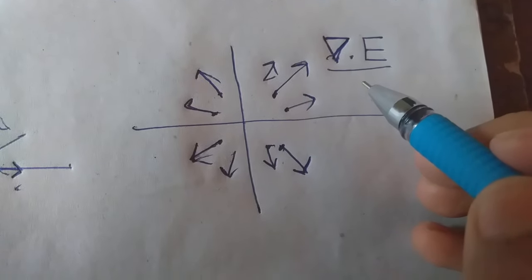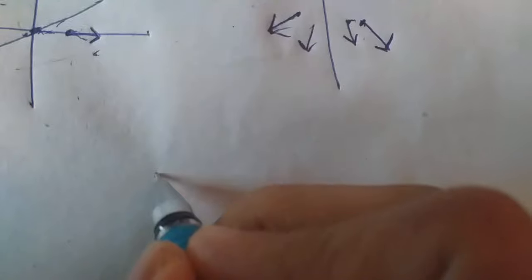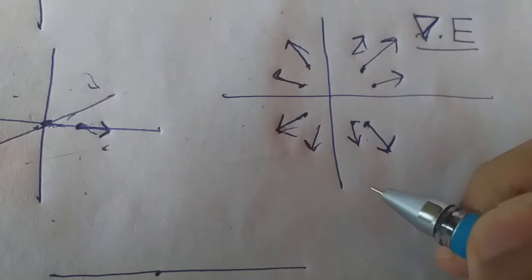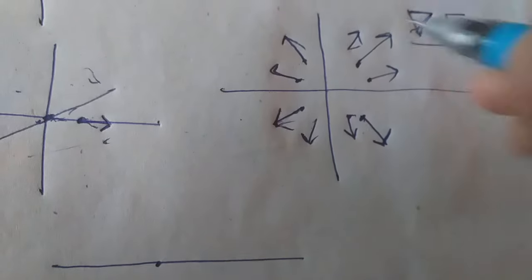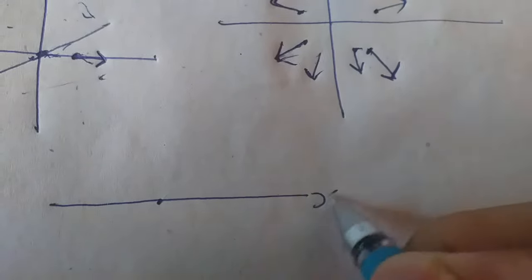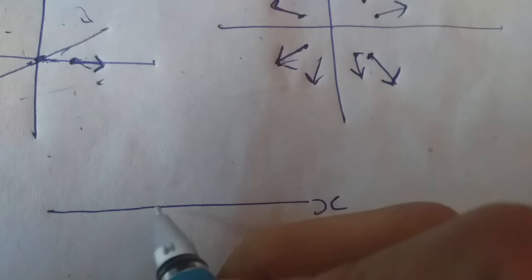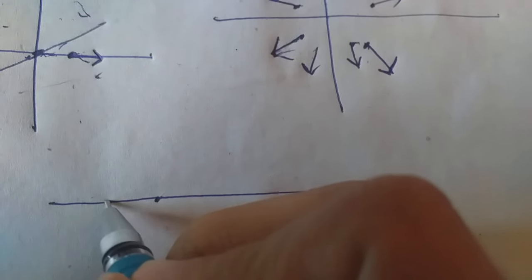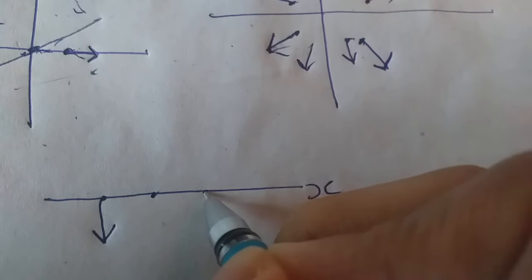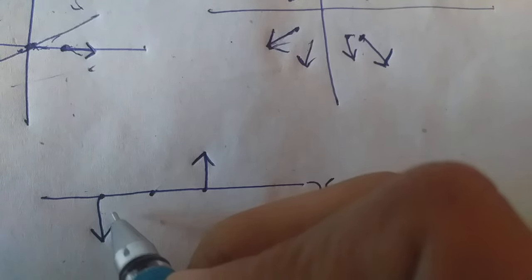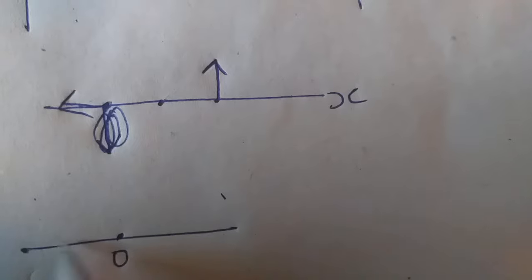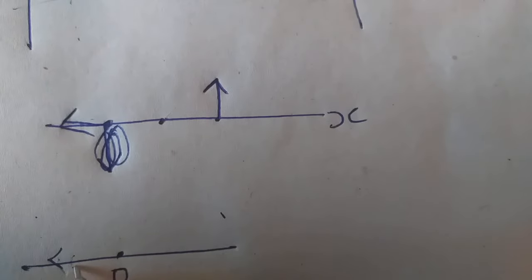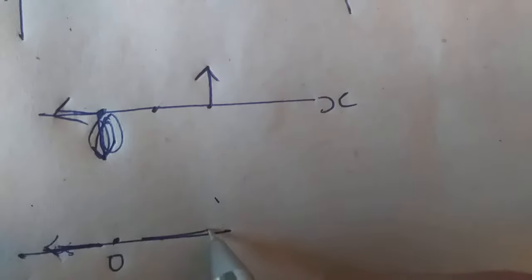Let's take a look at this electric field. Let's take a look at the x-axis and the y-axis. By adding the x-axis — the total x-axis — it is negative. Then it is positive. Let's take a look here: if you add a vector, it will be positive.